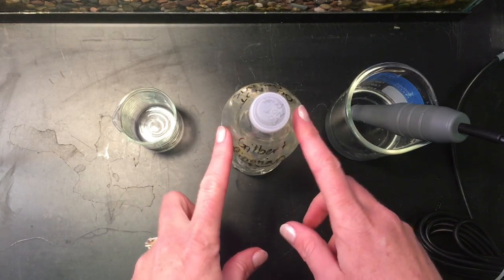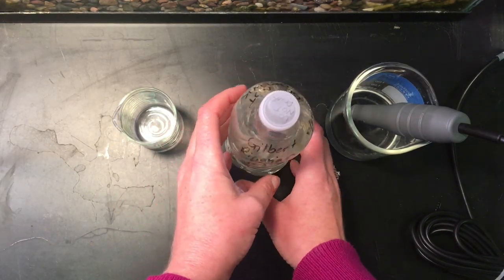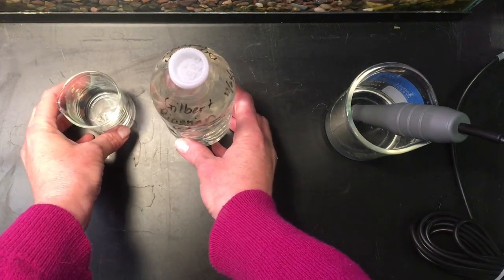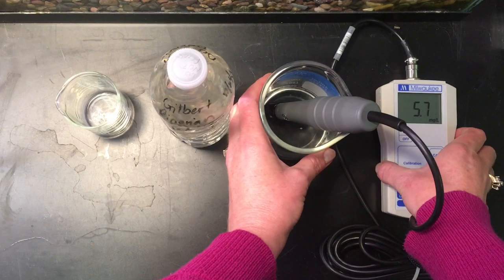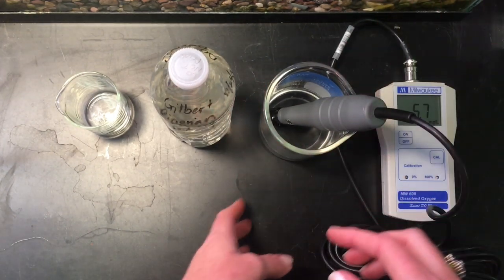Here we have our water sample from the Gilbert Riparian Preserve, one of the ponds. And now we're going to check the dissolved oxygen of it after it's been a few days. So we have our dissolved oxygen probe here in distilled water warming up.